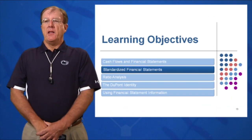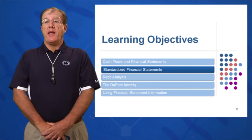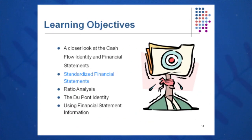In the second learning objective of session three, we want to look at how to standardize a financial statement. We do this because companies are of varying sizes and we want to look at specific firms. How does Dell manage inventory to such a low number? So if we're General Motors or Ford and we want to look at Dell, we want to see how they do it.